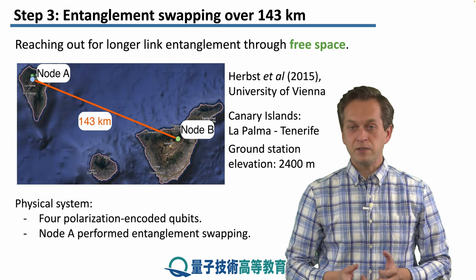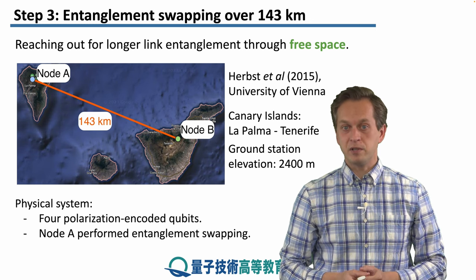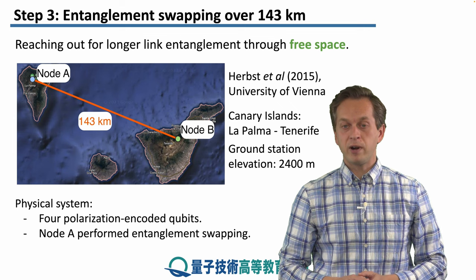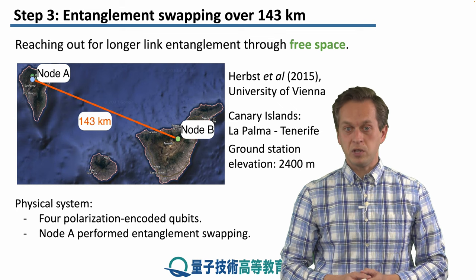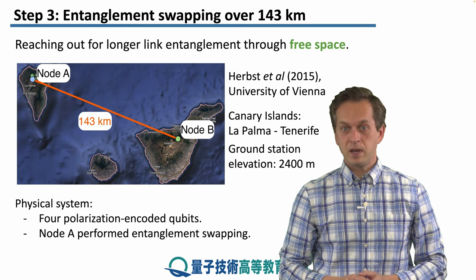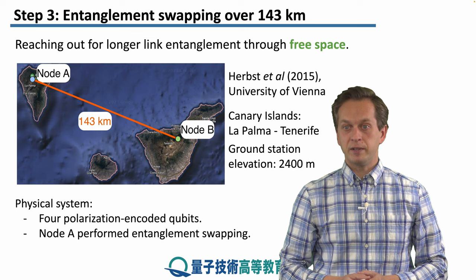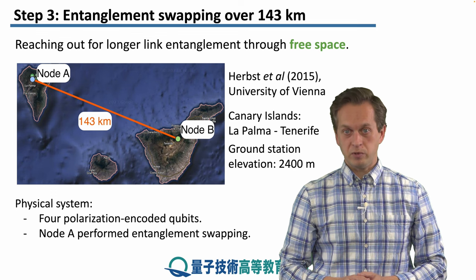The physical system used in this experiment consisted of four polarization encoded qubits. Node A performed the entanglement swapping operation.